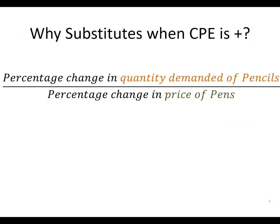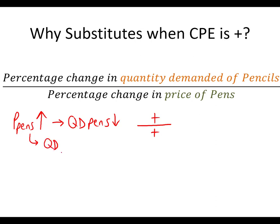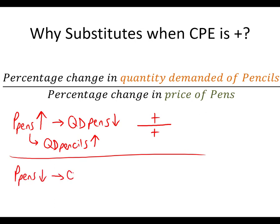Why does a positive cross-price elasticity mean goods are substitutes? Say the price of pens goes up — the quantity demanded for pens falls by the law of demand. For our fraction to be positive, we need a positive numerator, meaning the quantity demanded of pencils increased. Alternatively, if the price of pens falls, the quantity demanded for pens goes up, and we need a negative numerator, so the quantity demanded of pencils falls. In both cases: fewer pens and more pencils, or more pens and fewer pencils — they're substitutes.